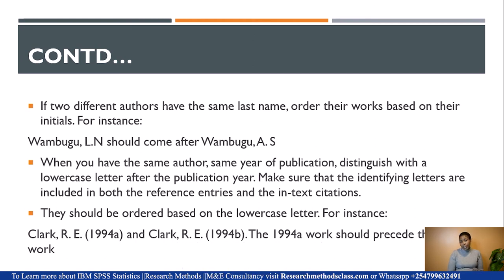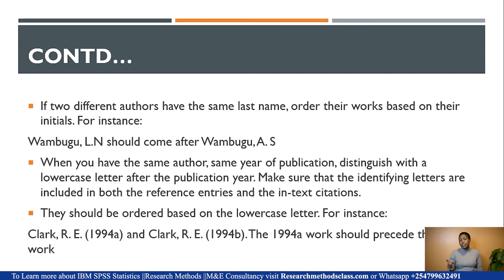If two different authors have the same last name, order their works based on their initials. For instance, if you read a book by Wabugo L.N. and another book or journal article by Wabugo A.S., then Wabugo A.S. should come before Wabugo L.N., because A comes before L. So you order their work based on their initials, starting with the lower alphabet.